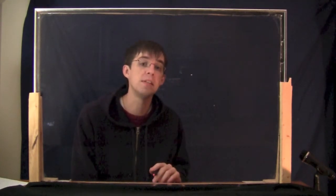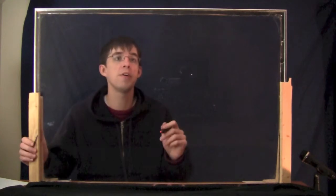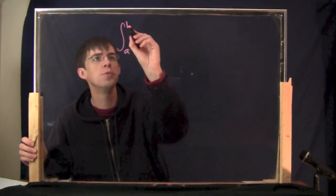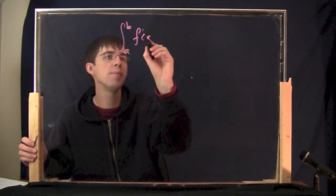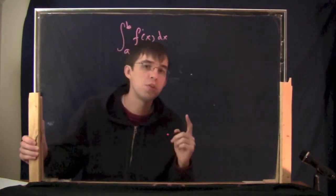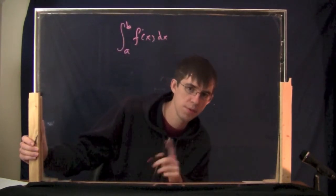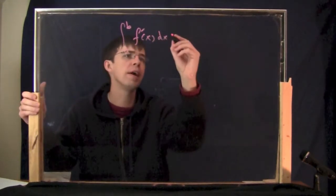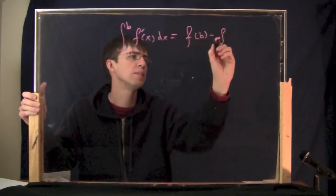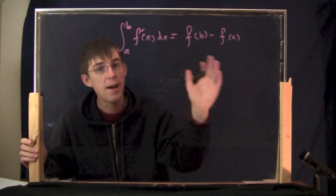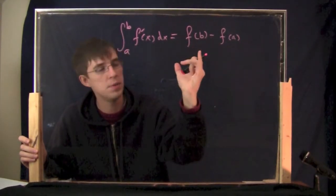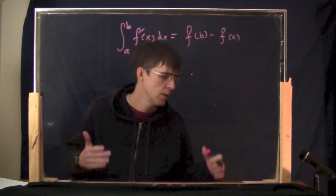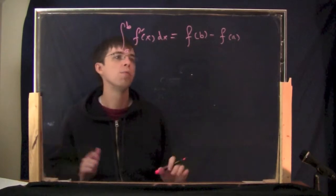Actually, we've already talked about all the ingredients necessary to compute the actual area under the curve. It really has to do with this total change business. If you recall, the integral from a to b of f prime of x dx is equal to the total change of f of x. The total change from a to b. Another way of writing that is f of b minus f of a. This is the total change of f from a to b. You take the final value, which would be f of b, and you subtract off the first value, which is f of a, and that difference is the change, the total change.